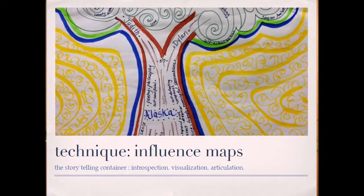At the Temenos lab, I use one technique — simple. It's called influence maps. You're seeing here the influence maps of a great friend and participant of Temenos. It's pretty simple: introspection, visualization, and articulation. Introspection — step one — is to go inside yourself and to look at the stories that have made you. Influential events, people, books, exercises, games you played, people you met, friends, enemies, your spouses, children — everyone is here.